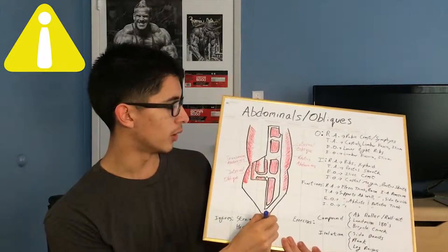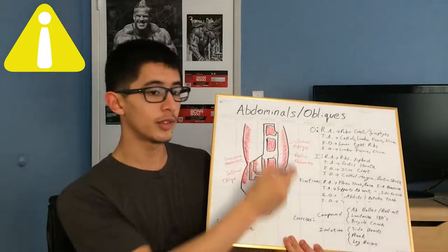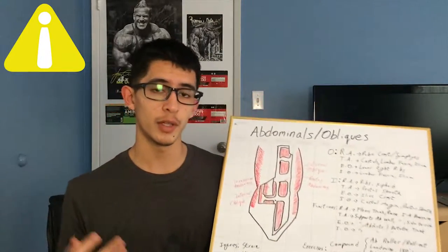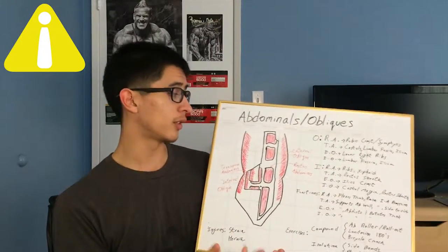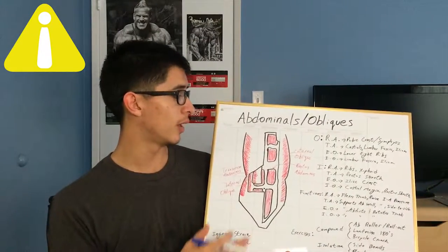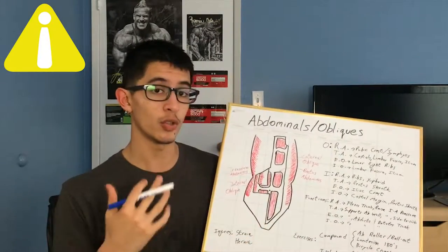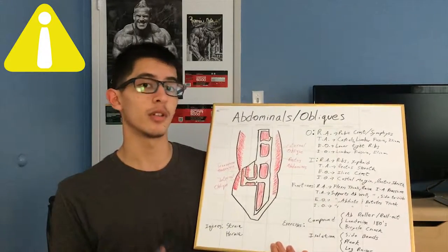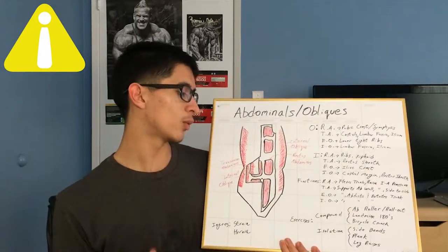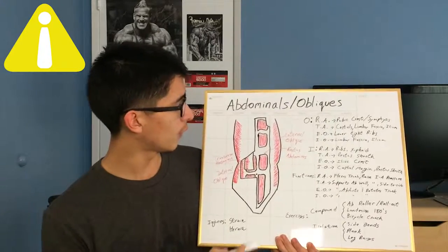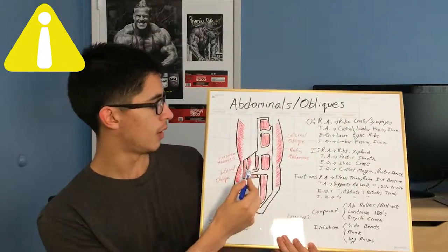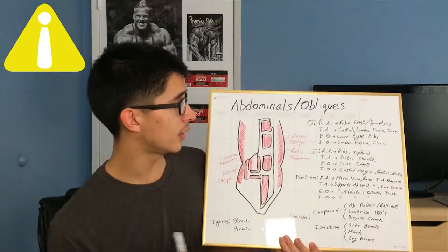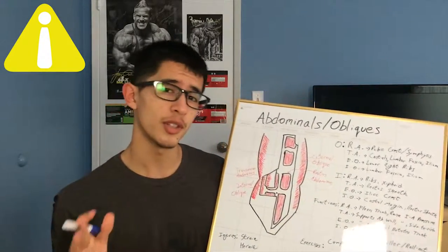Since it originates down here and inserts up here, it brings the upper body down. For ab exercises, you want to bring your torso down, but you can also bring your lower legs up and do the same crunching motion. For the transverse abdominis — the deepest layer of abs — it originates in the costals, which is just another word for ribs, the lumbar fascia, and the ilium.